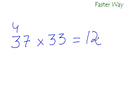And for the last two digits, all you need to do is multiply this 7 with this 3, that is the units digits together. 7 times 3 is 21, and there you have the answer. The answer is 1221. Isn't that simple?